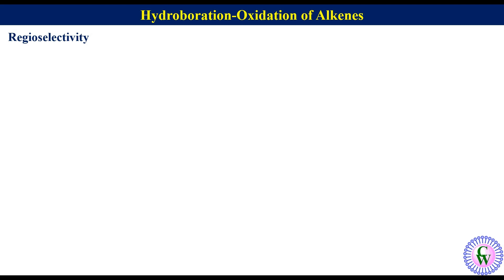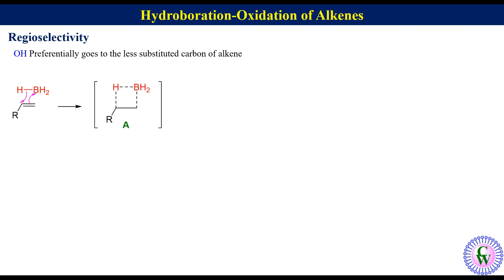Regioselectivity in hydroboration oxidation: hydroboration oxidation of an alkene gives the anti-Markovnikov hydration product as the major product — that is, the OH preferably goes to the less substituted carbon of the alkene. This can be explained in terms of stability of the transition state. For an unsymmetrical alkene reacting with borane, transition state A has a partial positive charge on boron and the carbon not attached to boron, and a partial negative charge on hydrogen and the carbon attached to boron.